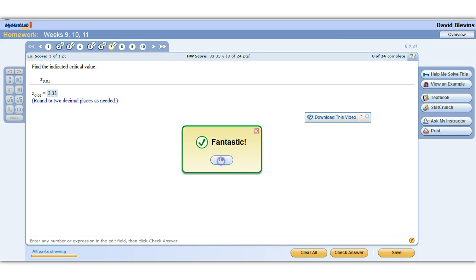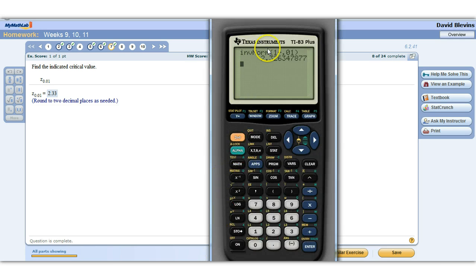Now, I do want to show you that if you forget to do the 1 minus, if you just put in the 0.01, it will give you the same number, but it will give you its opposite. It will give you the negative. So negative 2.3263,